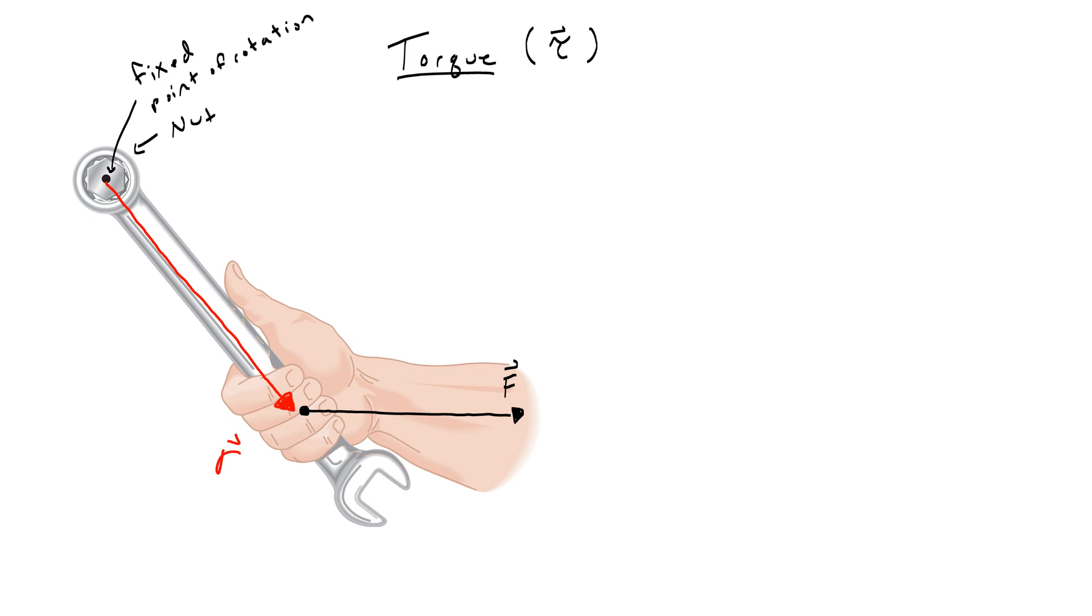These vectors both lie on certain lines. The radius lies on a line that we call the radial line. The force lies on a line that we call the line of action. The reason why we want to think about these two lines is because there is always going to be an angle between them, which we are going to call theta.